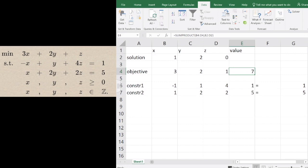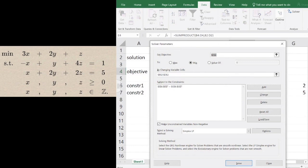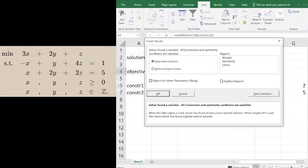Now what if I change something? Let's change this right-hand side to 2. This time I'm going to call Solver again with the same constraints, then click Solve. Let's see what we get.